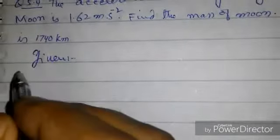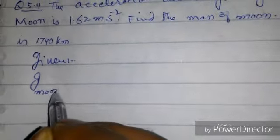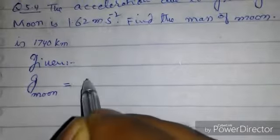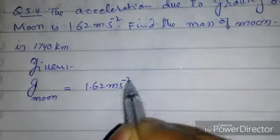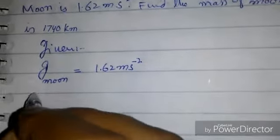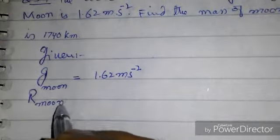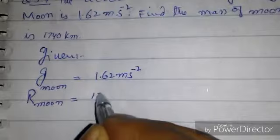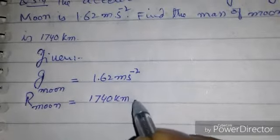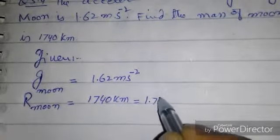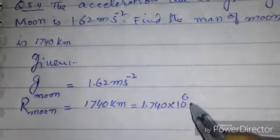Given: g at moon is equal to 1.62 meter per second squared. Radius of moon is 1740 kilometer or 1.740 into 10 raised to 6 meter.